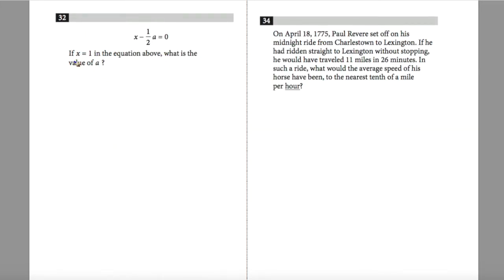Question 32, if x equals 1 in the equation above, what is the value of a? Here I have 1 minus one-half a equals 0. Multiply the entire equation by 2 in order to eliminate the fraction. 2 minus a equals 0. If I add a to both sides, here I have 2 equals a. That is my answer.